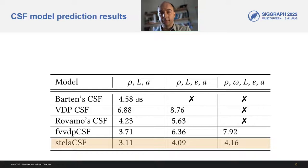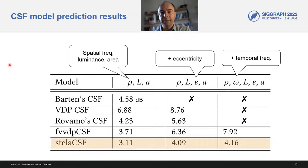So, how does Stella CSF compare with other models? One difficulty is that only one existing CSF model can predict all five dimensions of the CSF, and this is our work from a foveated video VDP metric. All others predict only a subset of those five dimensions. For that reason, we compared Stella CSF with CSFs that account for spatial frequency, luminance, and area only, and then with CSFs that also include eccentricity, and finally for all five dimensions. As you can see, the prediction error for Stella CSF is often half as small as for other CSF models.